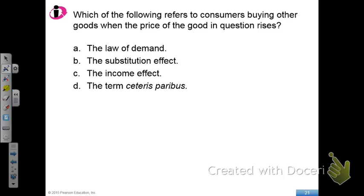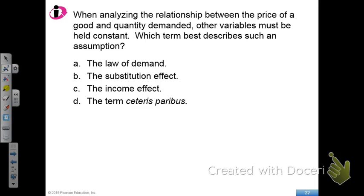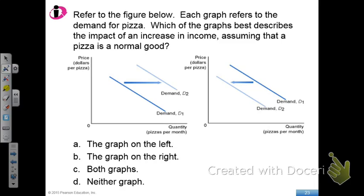Next question: which of the following refers to consumers buying other goods when the price of the good in question rises? The correct answer is B — the substitution effect. Substitution effect says that whenever the price of a good increases, in a market where goods are homogenous, you always buy the goods that are cheaper. The next question: the term ceteris paribus means everything else being constant — the answer is D — and that's an assumption you need to make if you want to understand how price and quantity demanded change.